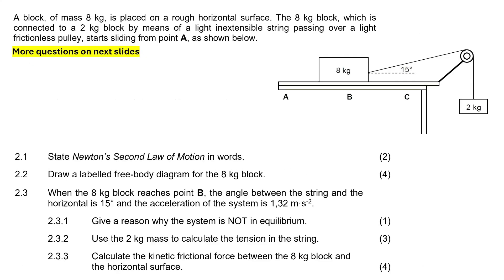A block of mass 8 kilograms is placed on a rough horizontal surface. The 8 kilogram block, which is connected to a 2 kilogram block by means of a light string passing over a frictionless pulley, starts sliding from point A, as shown below. The first question: state Newton's second law of motion.